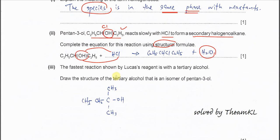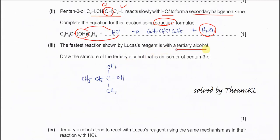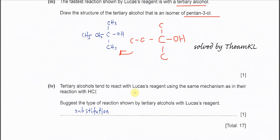The fastest reaction shown by the Lucas reagent is with the tertiary alcohol. Draw the structure of tertiary alcohol which is the isomer of pentan-3-ol. This one very easy. You just try to do this first. The carbon with OH you just put three carbons bonded to that. Then you complete the remaining. Because here we know that it's just 1, 2, 3, 4 carbons. You need to have another carbon. So you just complete with H, you get this structure.